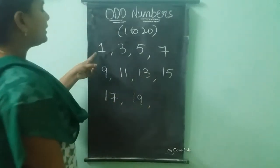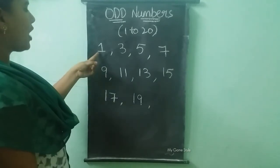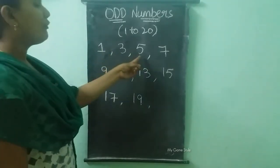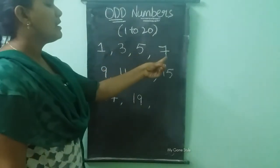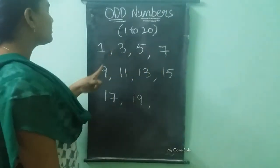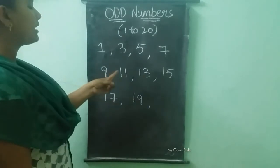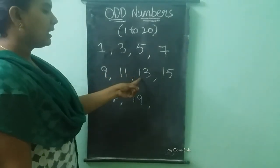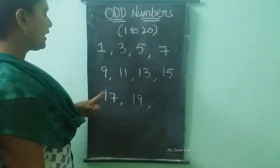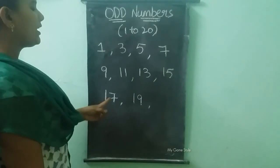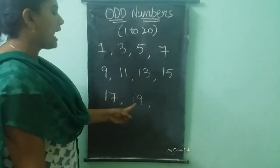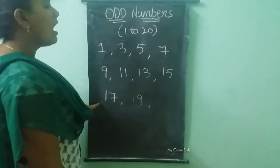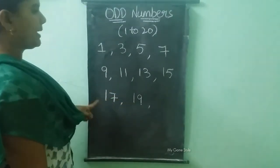These are the odd numbers: 1, 3, 5, 7, 9, 11, 13, 15, 17, and 19. These are the odd numbers.